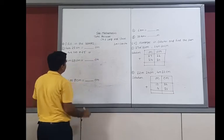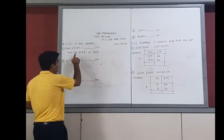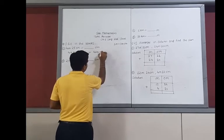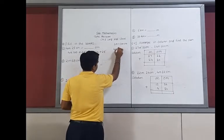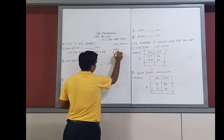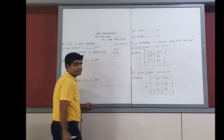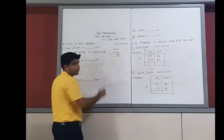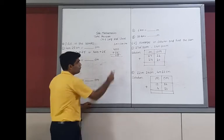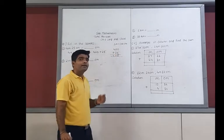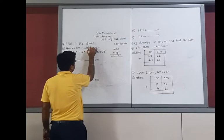Now we solve it: 4 multiplied by 100 gives 400. Then we add 25. Starting the addition: 0 plus 5 is 5, and 0 plus 2 is 2, and 4 carries down. So the answer is 425. Your current answer is 425 centimeters.